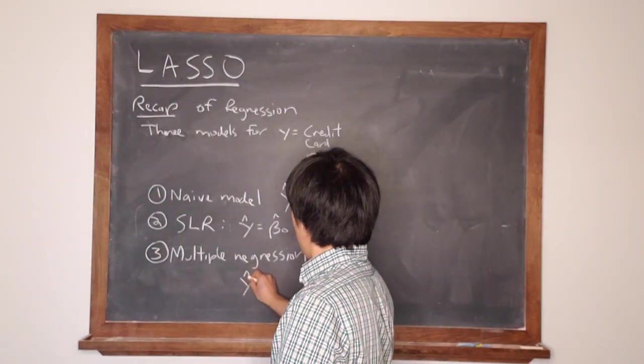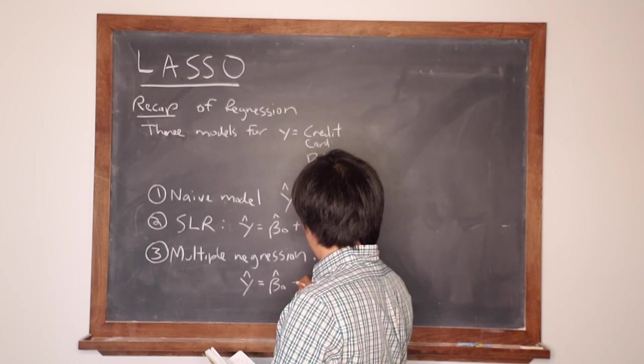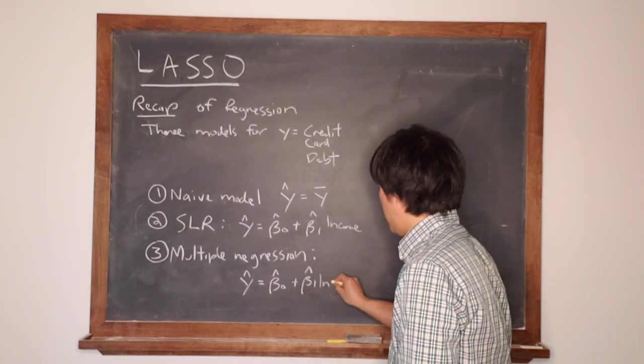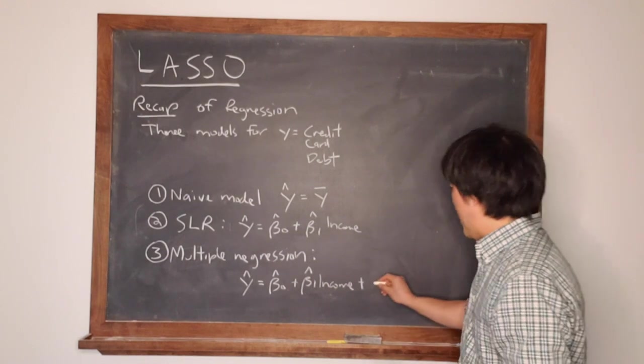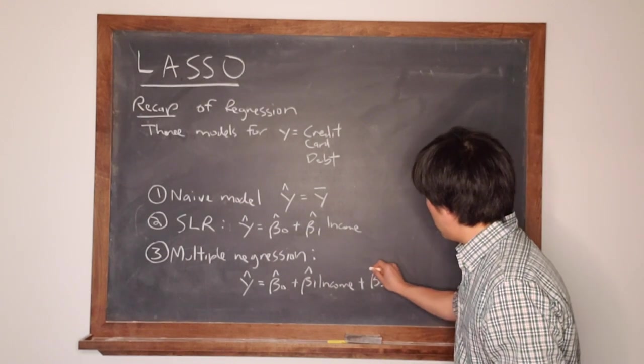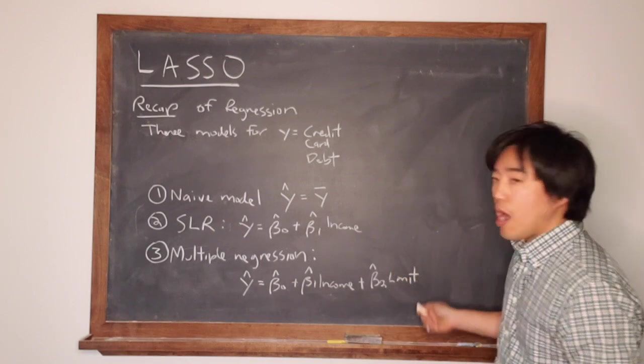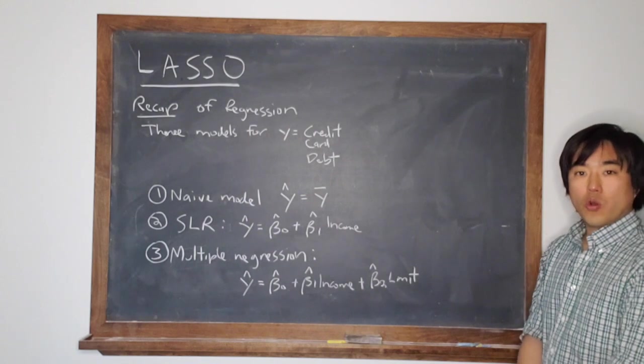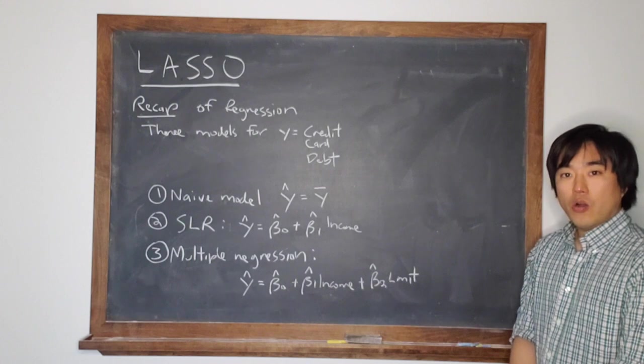Again, Y-hat is equal to an intercept plus beta-1-hat times income plus beta-2-hat, which is limit. So now we're incorporating more than one variable—two variables. We're incorporating the individual's credit limit as well.